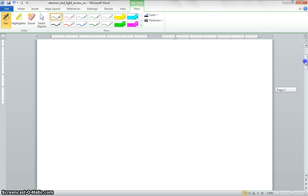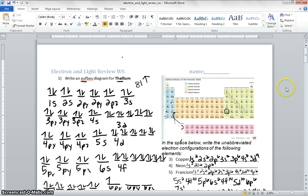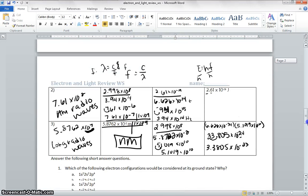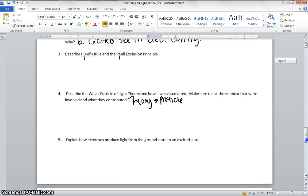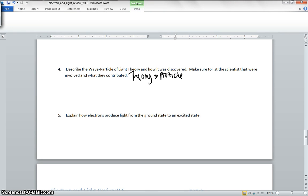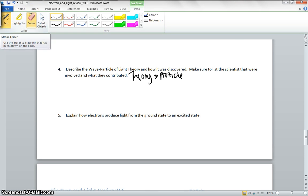Explain how electrons produced light from the ground state to excited. So if we have an electron and it's at ground state, say it's here, and when it gets excited, it bumps up to another energy level. So, it's hanging out there. Once it starts to fall, that's the light we see.